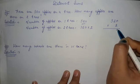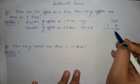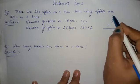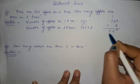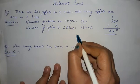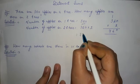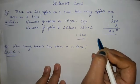2 times 0 is 0, 2 times 8 is 16, 6 and 1 carry. 2 times 3 is 6 plus 1, 7. So the number of apples on two trees is 760.